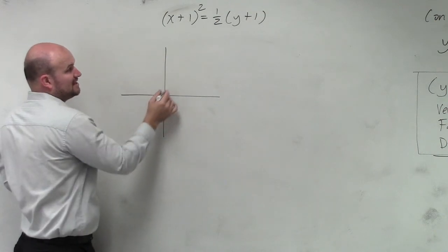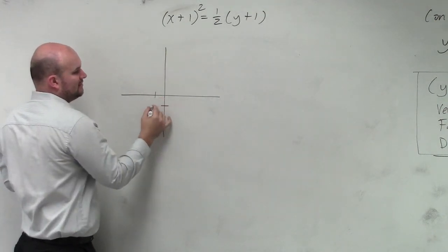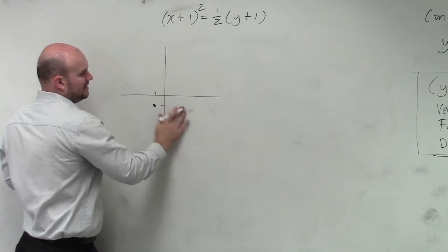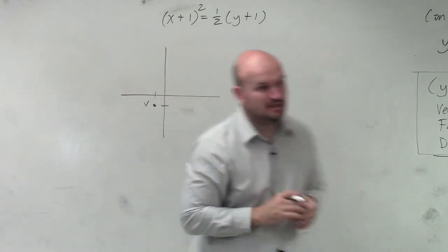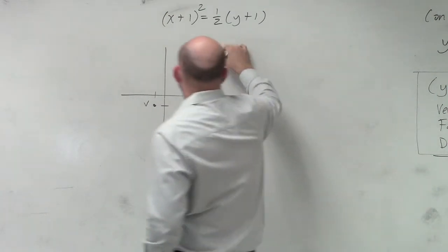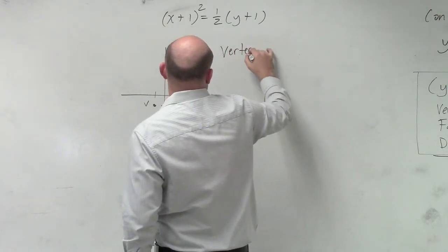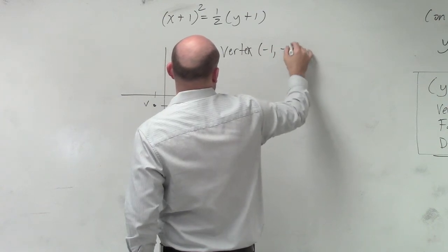First thing I want to do is find my vertex, which is at negative 1, negative 1. And I'll just get it right at a nice little v. The vertex is negative 1, negative 1.